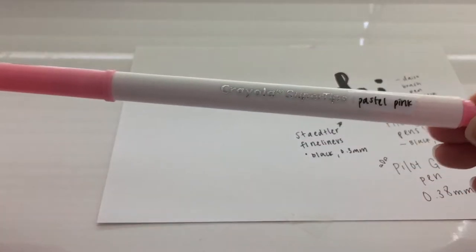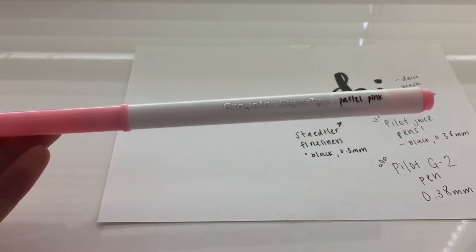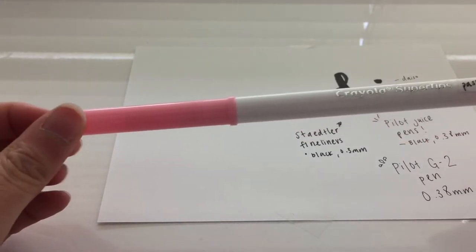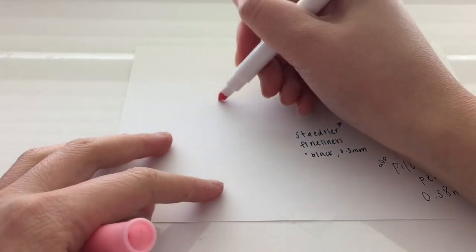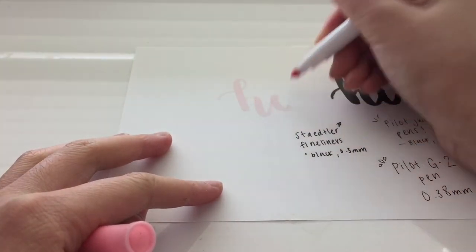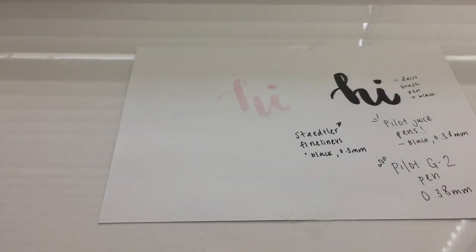Next are these Crayola super tips. I chose pastel pink and as you can see I labeled them because all the colors look the same. These pens are really good to practice calligraphy because it has a fine tip and a thick tip just like brush pens, so if you guys want to start practicing calligraphy I highly recommend using these.